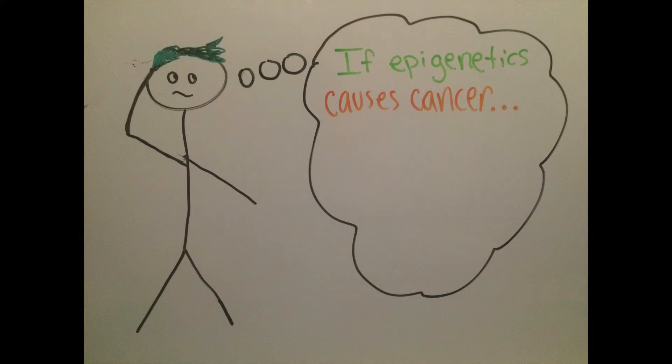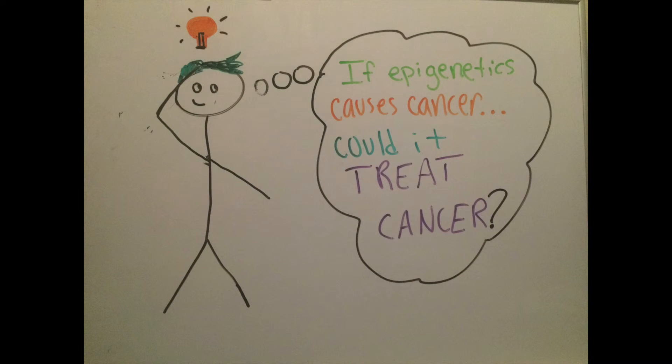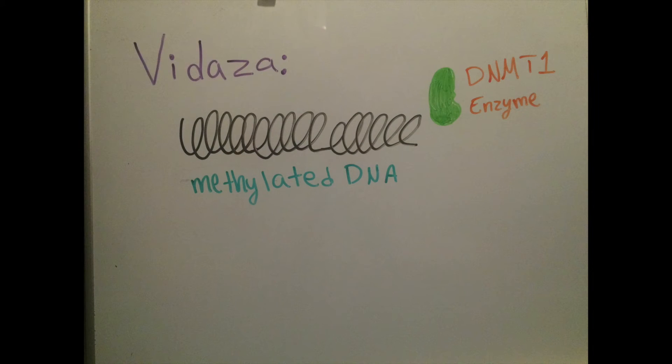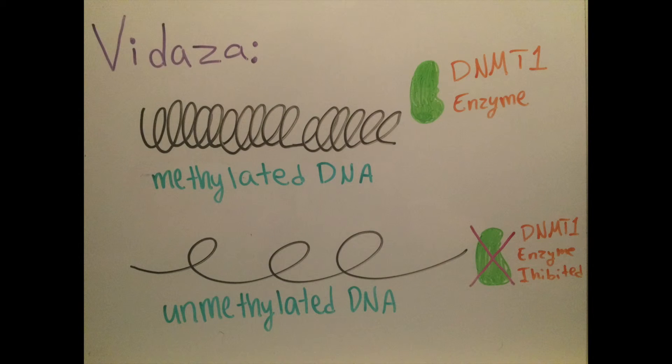One treatment is Vidaza, which is used to treat a group of blood and bone marrow disorders known as MDS. Methylated DNA is very hard for a cell to transcribe, and the DNMT1 enzyme aids in methylation. Vidaza acts as an inhibitor for the DNMT1 enzyme, which helps prevent methylation of tumor suppressor genes.